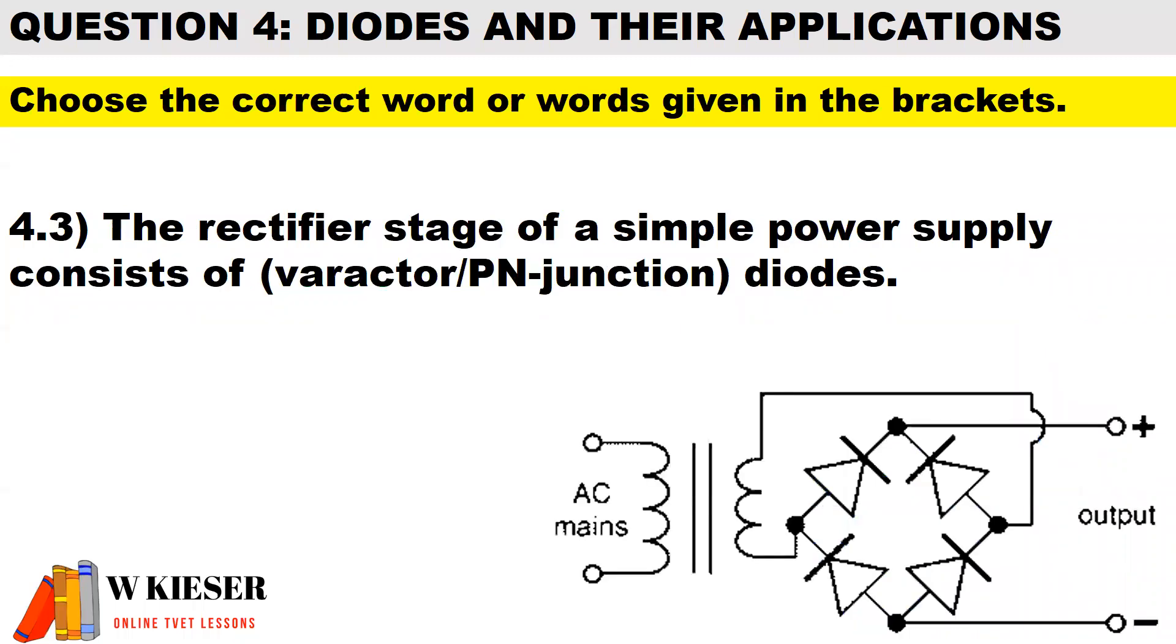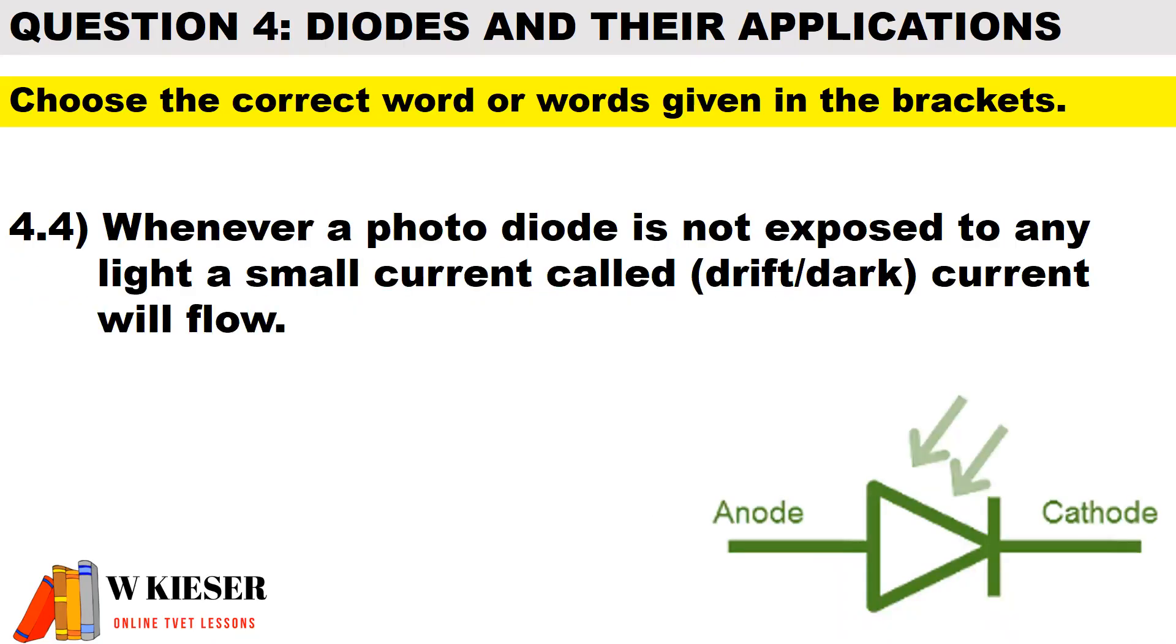In question 4.3, the rectifier stage of a simple power supply consists of PN junction diodes.